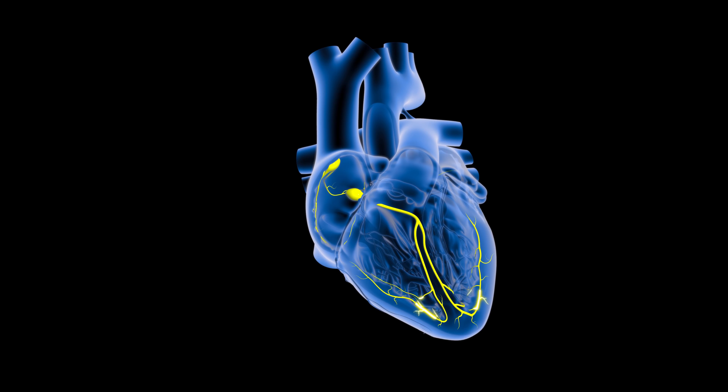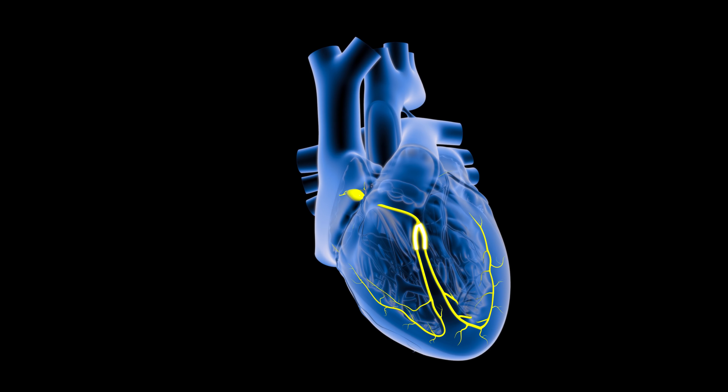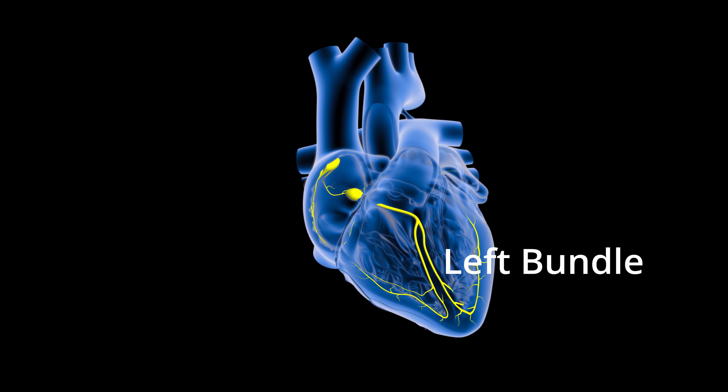When we talk about the bundle branches, these are a collection of fibres or cables that are essential for the electrical supply of the heart. For the heart to beat at around 70 times per minute on average, conduction or electricity must start from a point called the sinus node. The electricity then travels down through the entire heart muscle via these two main collection of cables or fibres, running on both the left side and the right side of the heart. That's why we distinguish them as the left bundle and the right bundle.